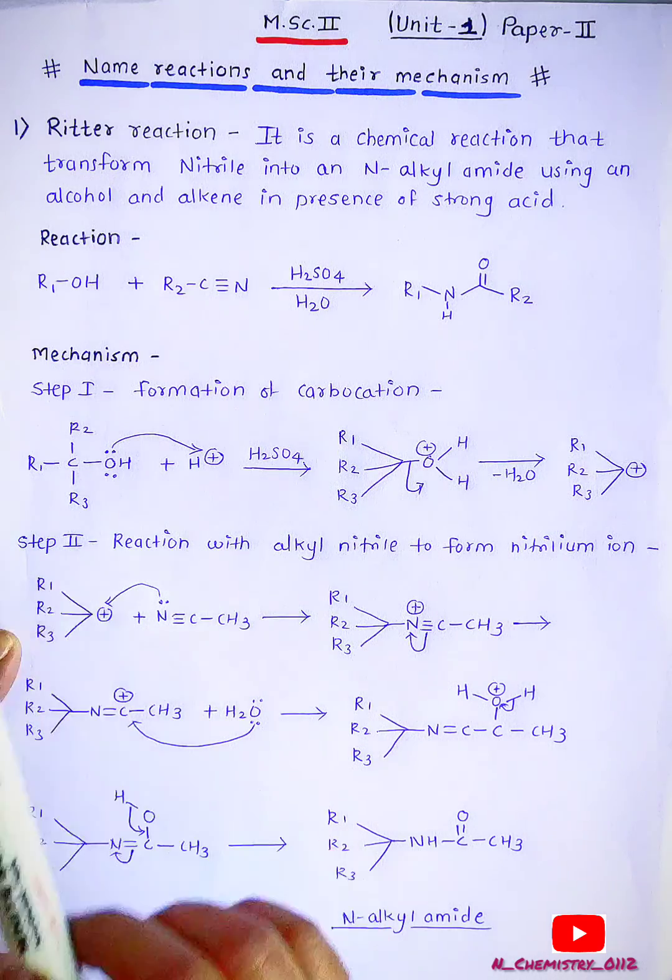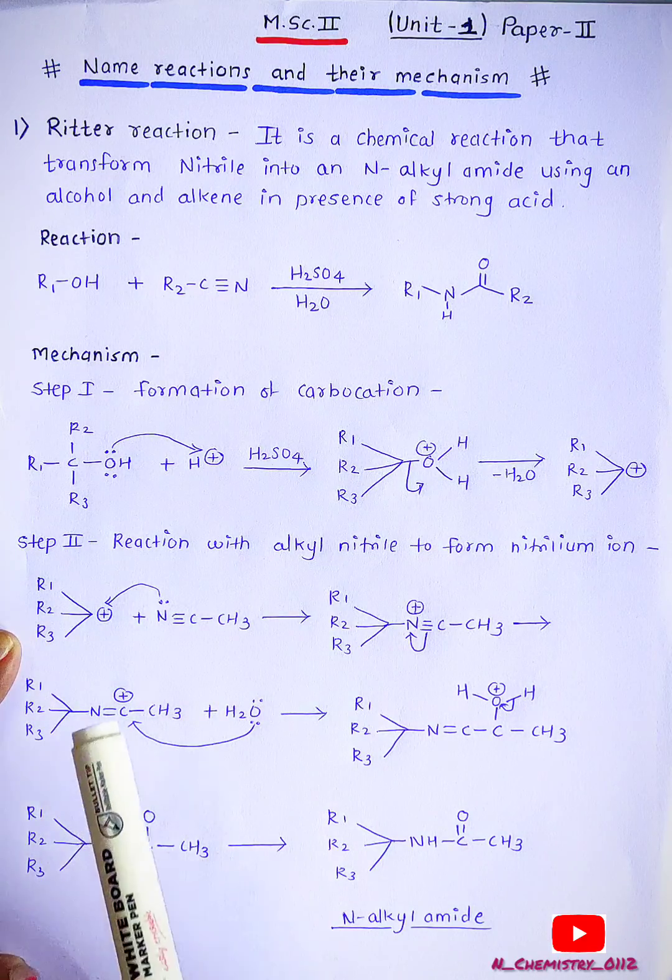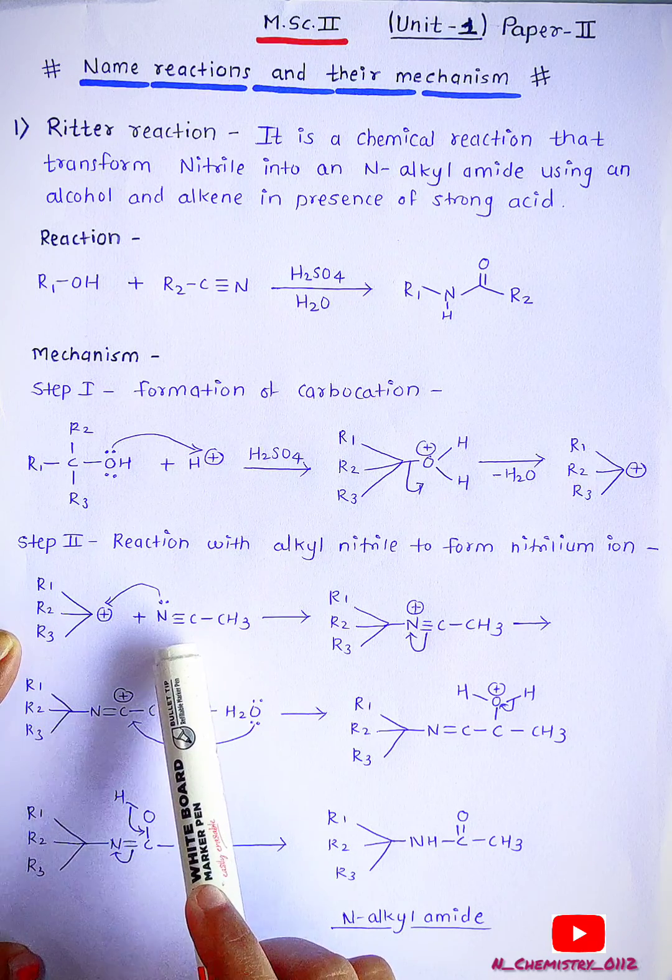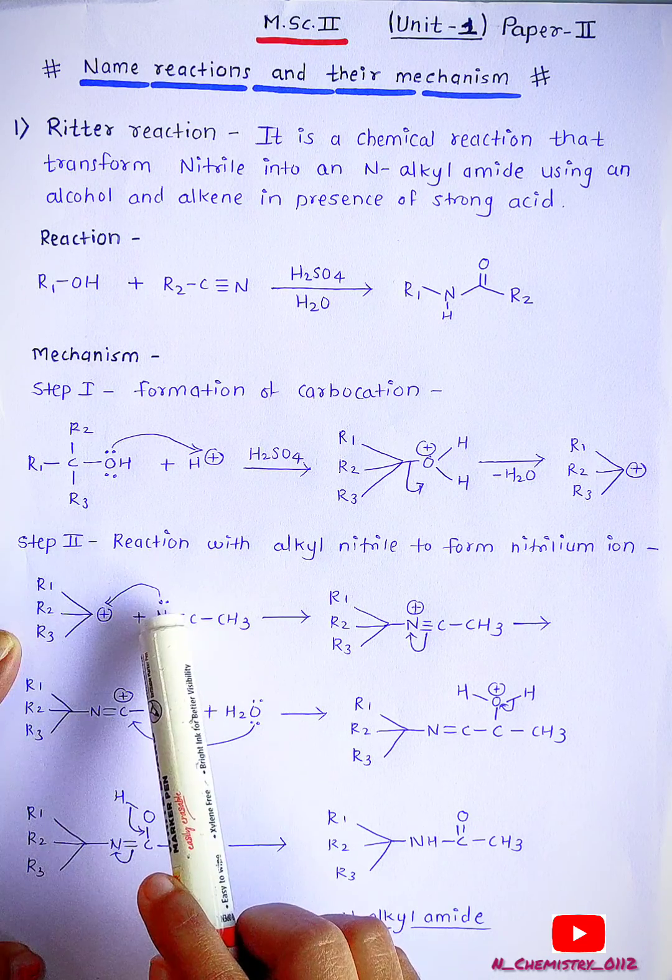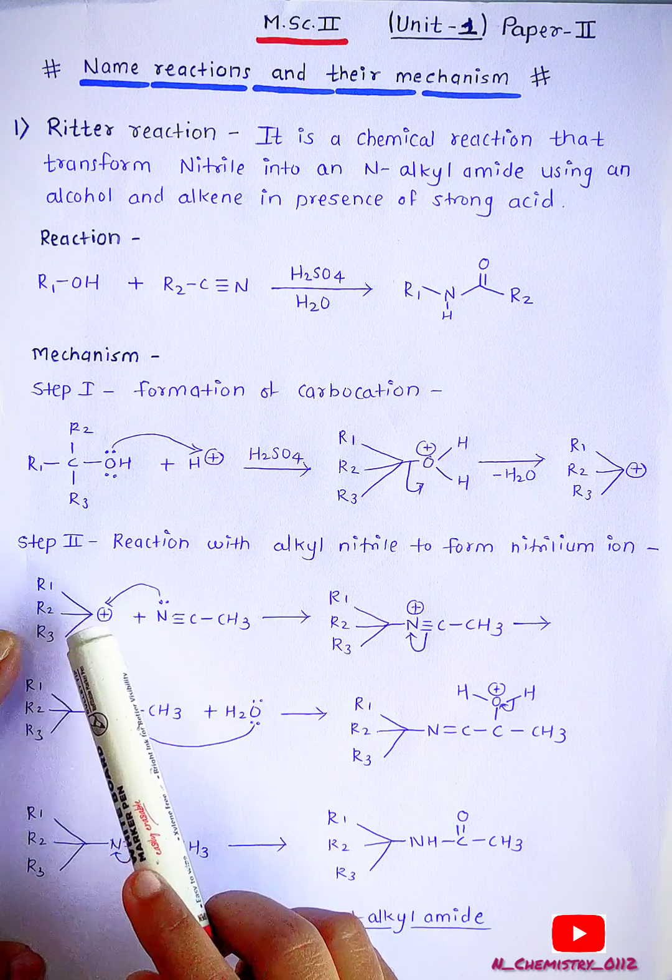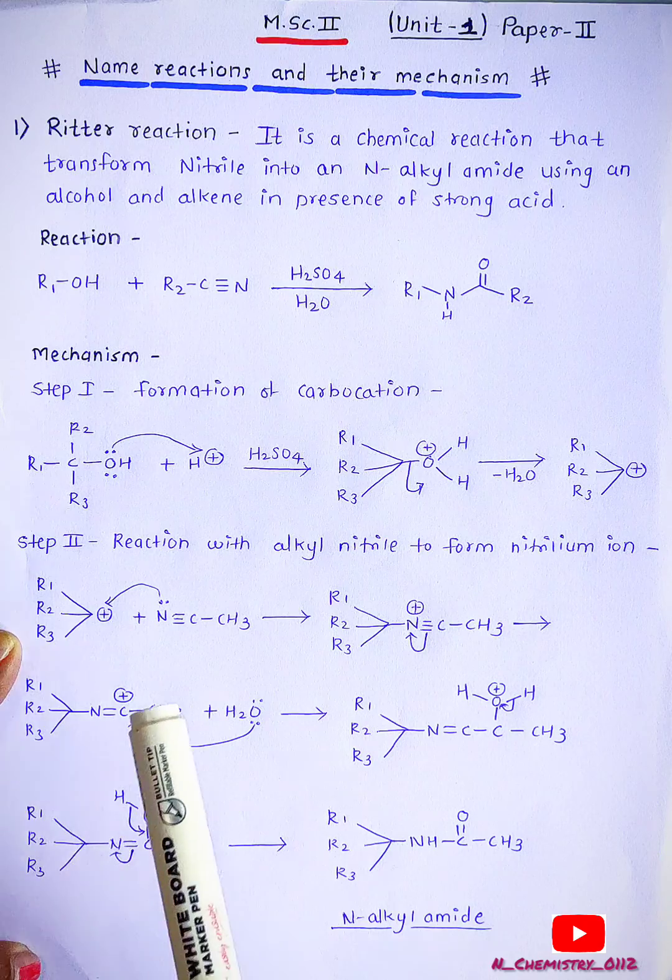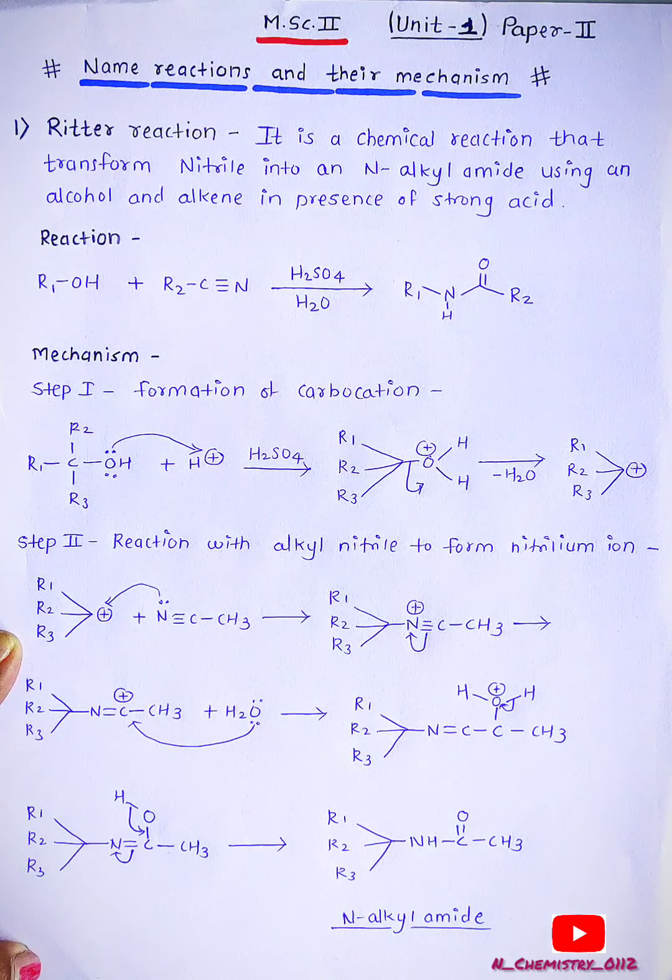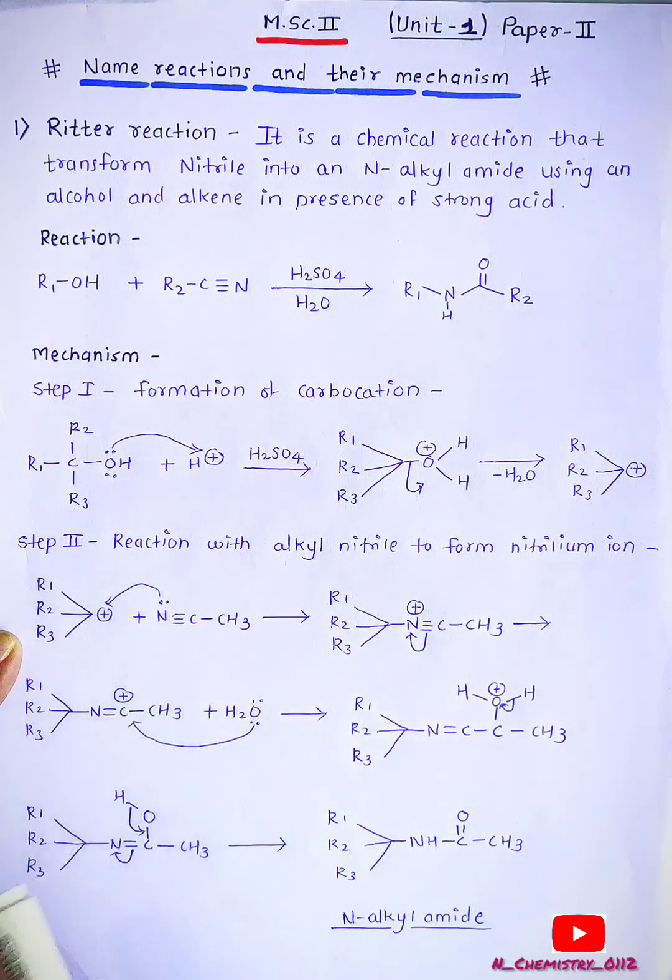In second step, reaction with alkyl nitrile to form nitrile ion. The carbocation gets reacted with nitrile. Nitrogen containing lone pair, and this is carbocation, it is electron deficient, and to form new bonding between electron donor and electron acceptor. To form this complex,